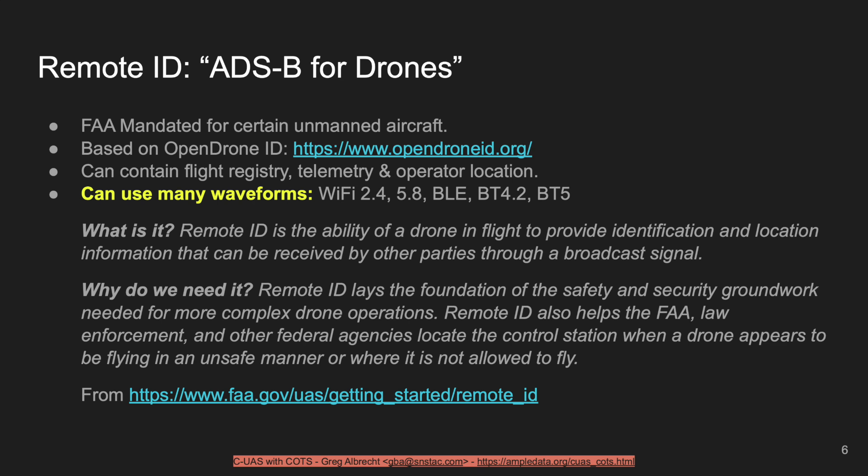The OpenDroneID data contains things like flight registry, flight telemetry, vector information, position information, and operator location information. It can use many different waveforms: Wi-Fi 2.4, Wi-Fi 5.8, BLE, Bluetooth 4, Bluetooth 5, and so on. The FAA's definition is that remote ID is the ability of a drone in flight to provide identification and location information that can be received by other parties through a broadcast signal.